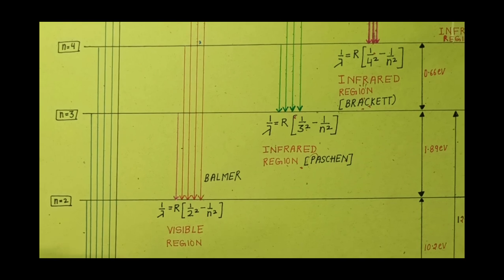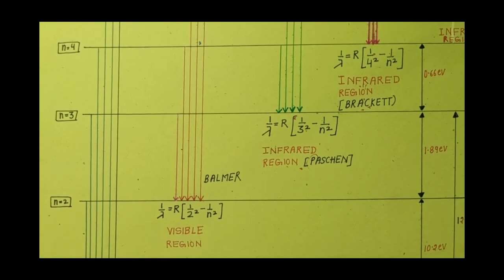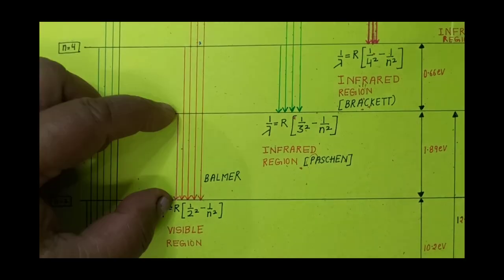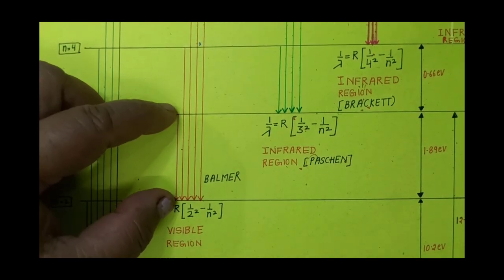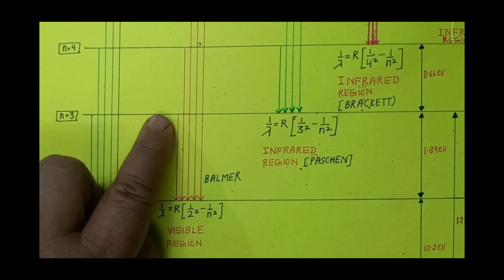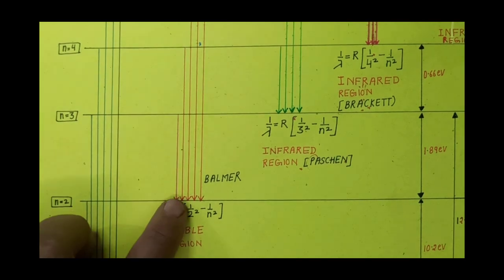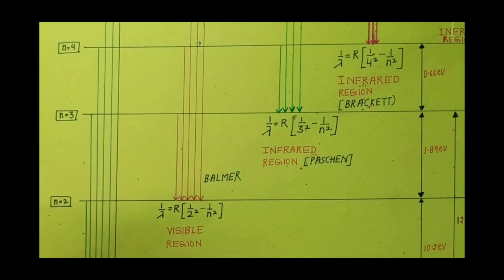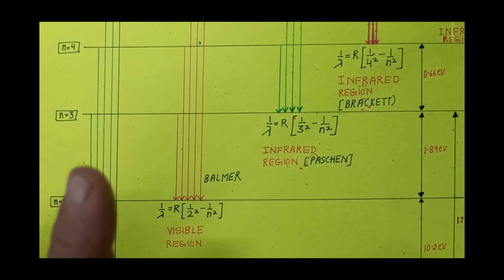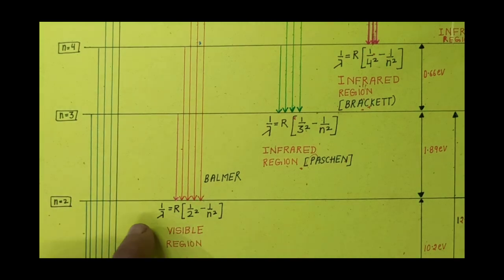For the Balmer series (visible region), the longest wavelength is obtained when the transition is from n equal to 3 to n equal to 2. The shortest wavelength in the Balmer series is obtained when the transition is from n equal to infinity to n equal to 2.